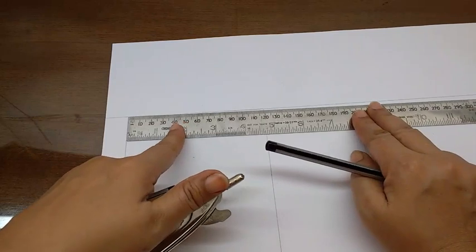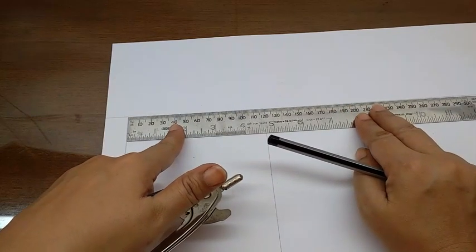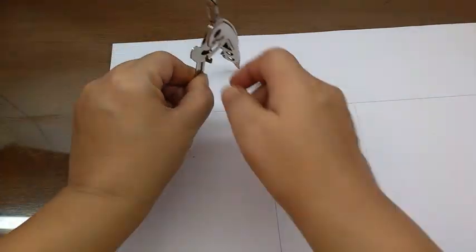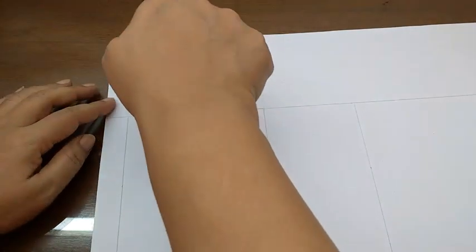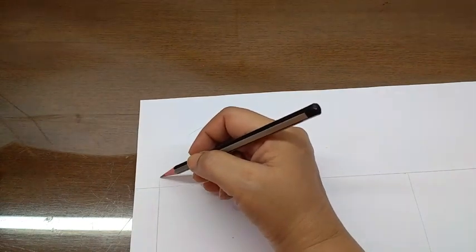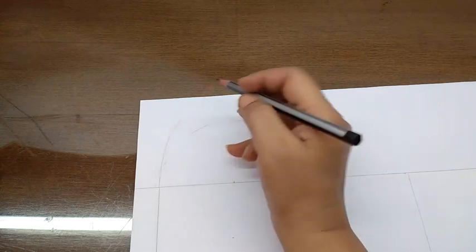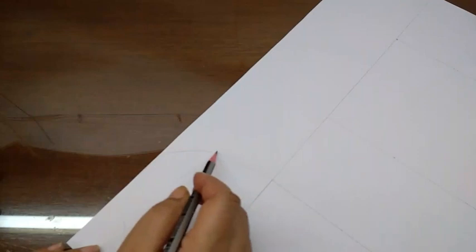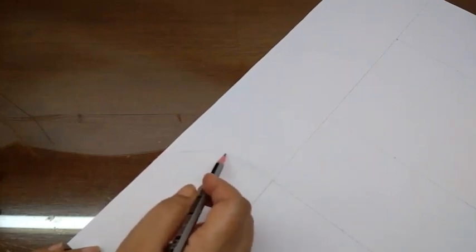And put a mark, a center mark on this. That's again 6 cm. So first just draw very lightly the semi-circle. Like this. And now I am just going to extend this further. So this has to be a little free hand. And like this. So this is how it will look.